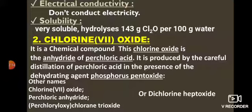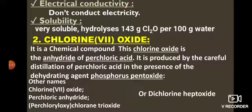Oxide number 2 of chlorine: chlorine 7 oxide (Cl2O7), in which chlorine exists in the +7 oxidation state. It is the anhydride of perchloric acid (HClO4) — produced by careful distillation of perchloric acid in the presence of a dehydrating agent such as phosphorus pentoxide. Other names: perchloric anhydride, perchlorooxychlorine trioxide, or dichlorine heptoxide. Chemical formula: Cl2O7. Physical state: liquid or gaseous; colorless oily liquid at room temperature with a choking smell.